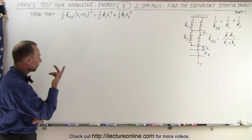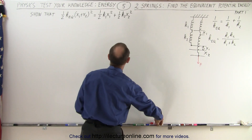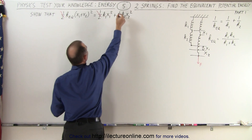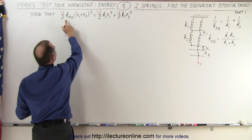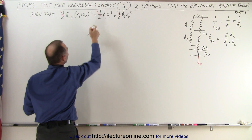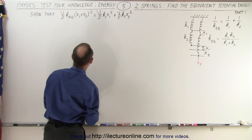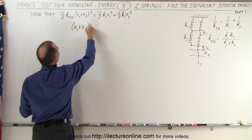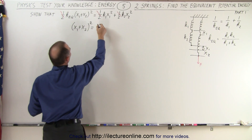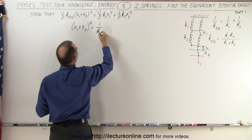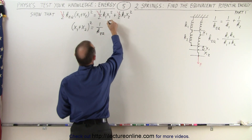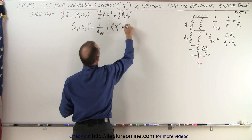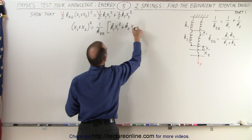First of all, every term has a half in it so the halves can cancel out. Then we take k_equivalent and move it to the other side, so we can write that (x1 + x2)² equals 1 over k_equivalent times (k1·x1² + k2·x2²).